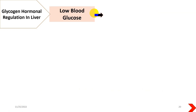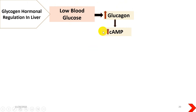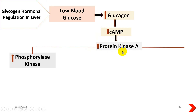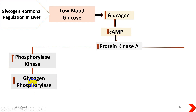When blood glucose level drops — for example during starvation or fasting — that will result in upregulation of glucagon, with high production of glucagon from the pancreatic cells. This will result in enhanced production of cyclic AMP, which leads to overexpression of protein kinase A. Protein kinase A relays the message downstream and upregulates phosphorylase kinase, which further acts on glycogen phosphorylase, enhancing its production and causing breakdown of glycogen so that more glucose is produced to cope with the low glucose level.